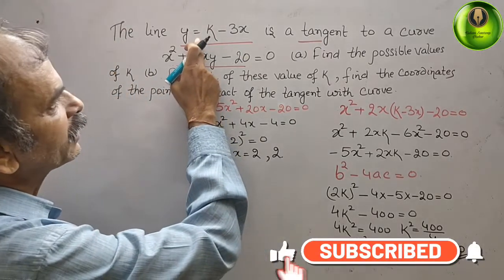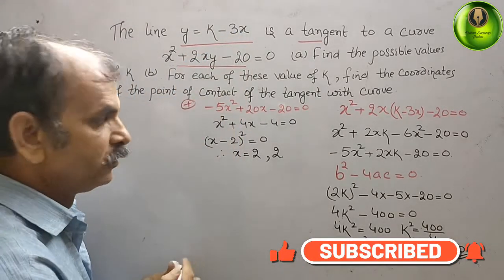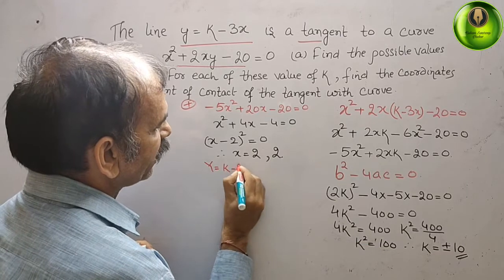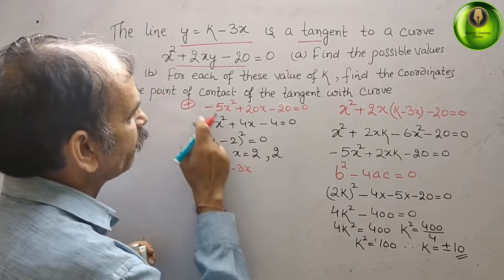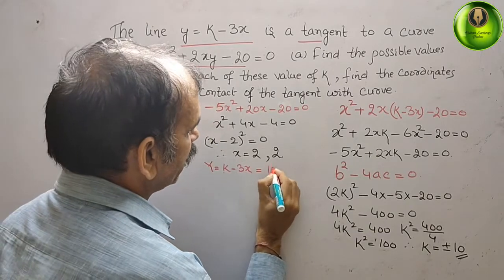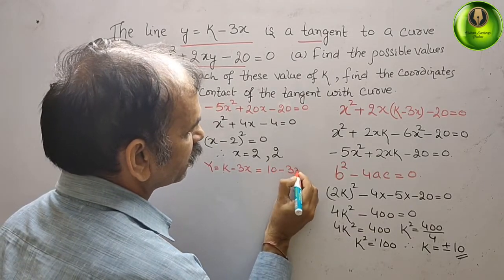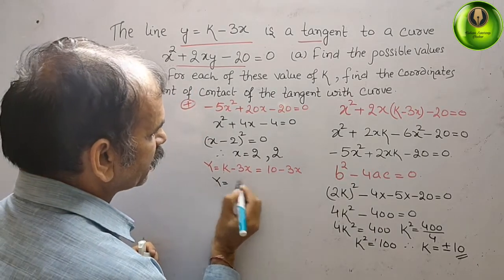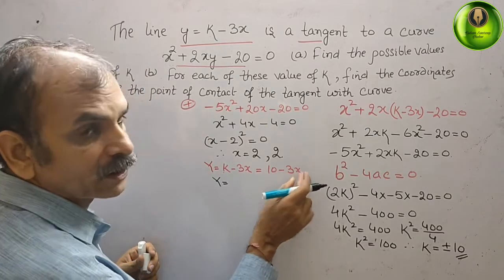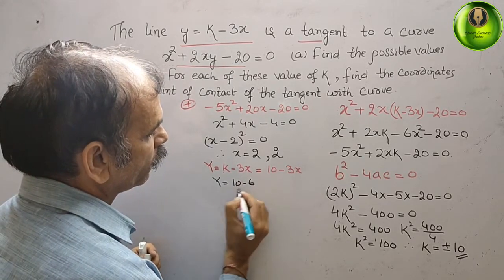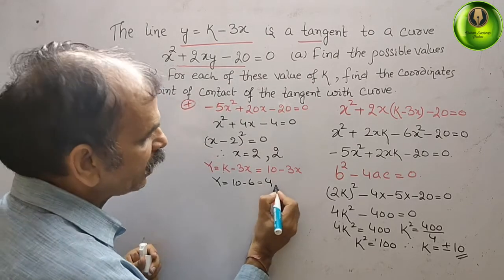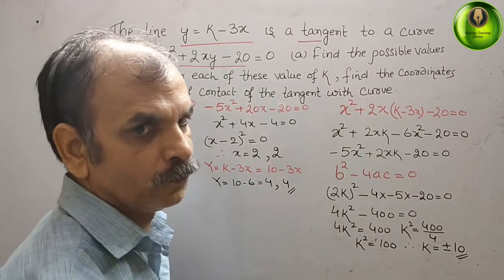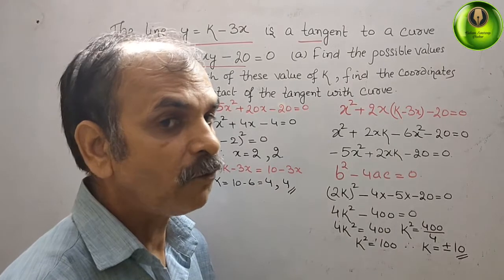Since k = 10, we use y = k - 3x = 10 - 3x. Substituting x = 2: y = 10 - 3(2) = 10 - 6 = 4. So for k = +10, the coordinates of the point of contact are (2, 4).